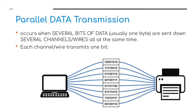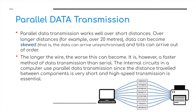The other type is parallel data transmission, where several bits of data are sent down several channels or wires at the same time, with each wire transmitting one bit. However, parallel data transmission works well only over short distances. Over longer distances — for example, over 20 meters — data can become skewed, meaning it can arrive unsynchronized, with bits arriving out of order. The longer the wire, the worse this problem becomes.